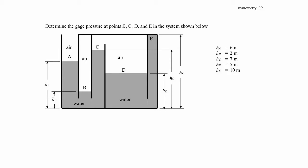In this example, we're asked to determine the gauge pressure at various points in this arrangement of fluid and air, water and air specifically. We're asked to find the gauge pressure at points B, C, D, and E in this system. We're given the heights at the various points, so let's go ahead and get started.